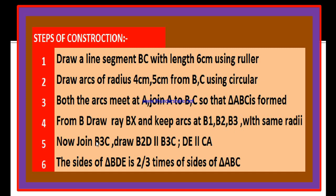Point 5: now join B3, C and draw B2, D parallel to B3, C and also draw D, E parallel to C, A. And sixth point: the sides of the triangle BDE is 2/3 of the sides of the triangle ABC. These are the steps of construction.